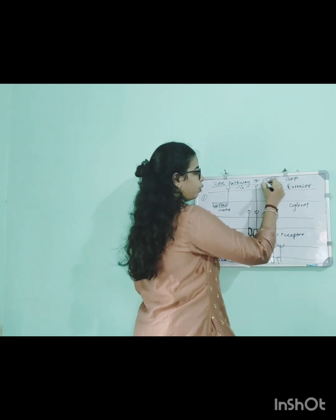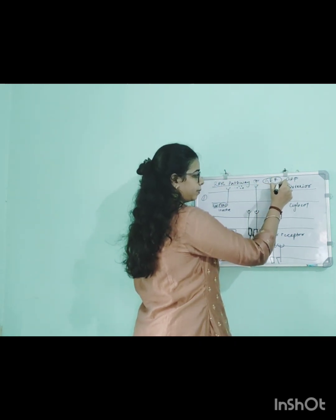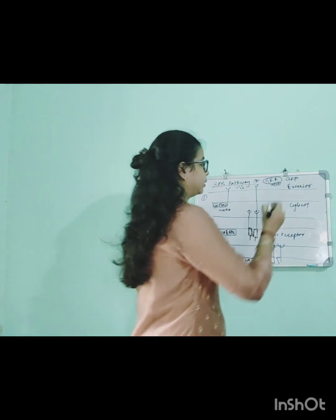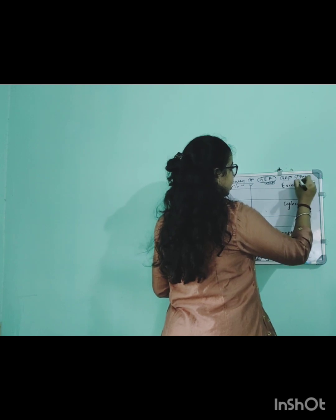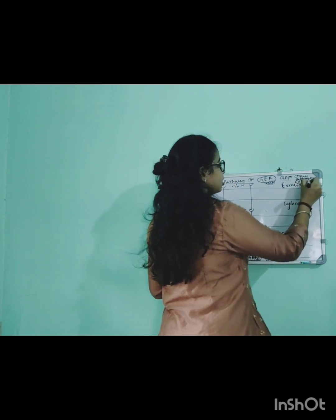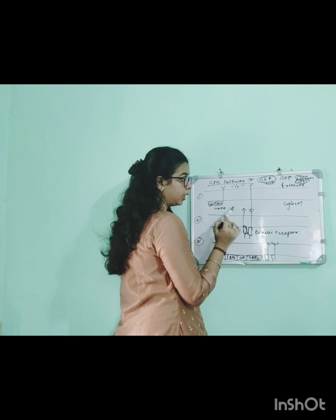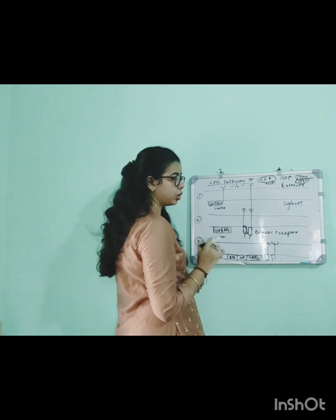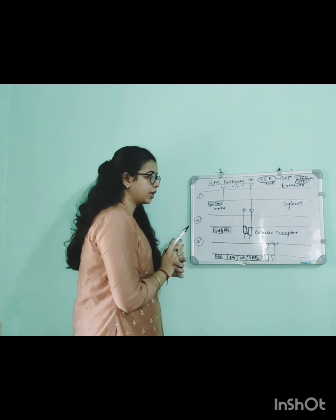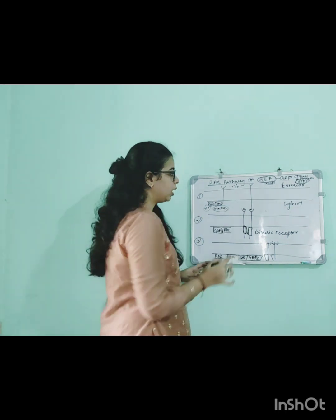GEF stands for Guanine nucleotide Exchange Factor, which attaches to RAS when it is in the GDP state. GEF is the activating factor. When RAS is in the inactive GDP state, GEF is attached to it. So when RAS is in the inactive state, GEF is attached; and when it is in the active state, GTP is attached.